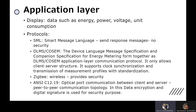The second protocol is DLMS/COSEM. It is used for smart energy metering and has two-way communication where it records information like energy, voltage, current and power. It communicates this information to the consumer, giving clarity on how much power is being consumed and how much power is being demanded by the customer. According to that, the generation station will be able to meet the demand. So it has a both-way communication.